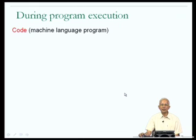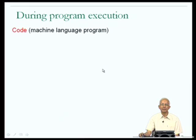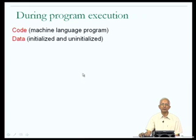The picture we should have in mind is the following. Our program, which we first wrote in C, has been modified by the compiler into an a.out, which contains machine language instructions corresponding to the steps of our program — and that is called the code of our program. In addition, the a.out also contains data, which could be data which has initial values or data which did not initially have values.